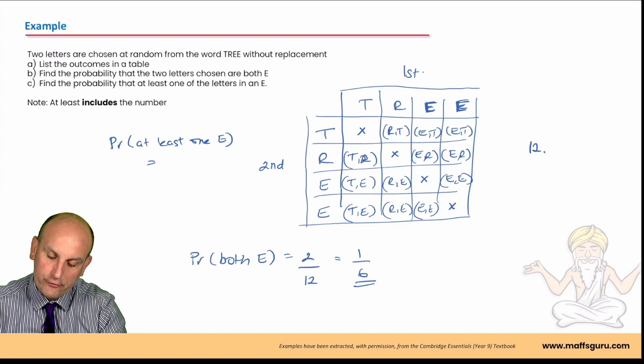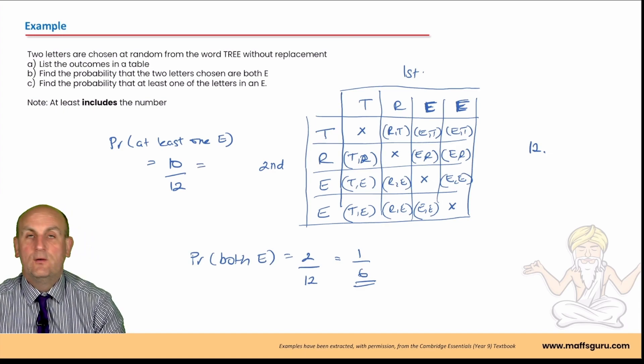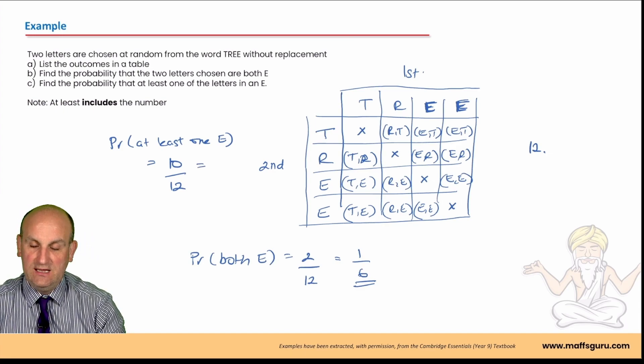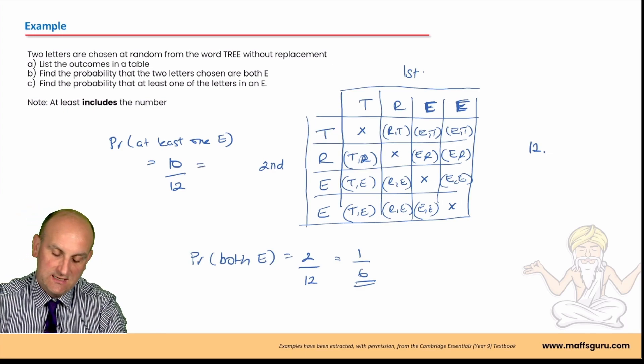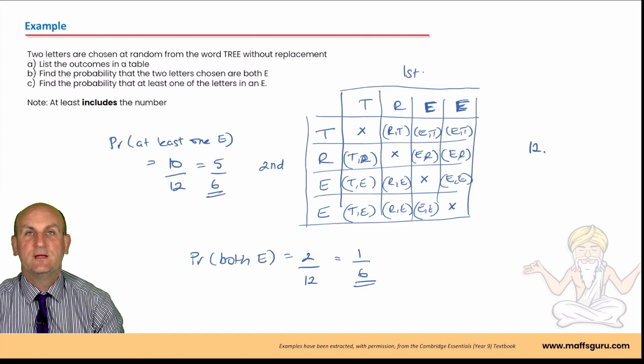So, I've got at least one E. There's going to be one, two, three, four, five, six, seven, eight, nine, ten. So, in that situation, there is going to be ten of those which actually have at least one E. And by that, it has one E or two E's. Again, cancelling that down is going to give me five on six. And there is my correct answer.